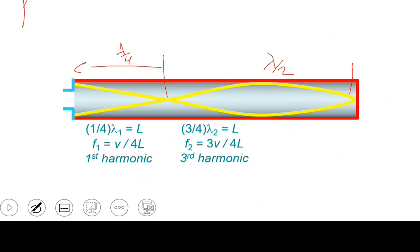And frequency, it will be 3V over 4L. Because frequency, it's velocity over lambda. So the frequency will be velocity over lambda, 3L over 4. 3V over 4. This is the third harmonic.